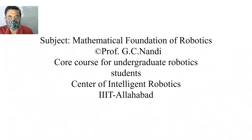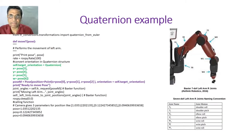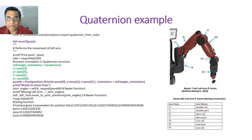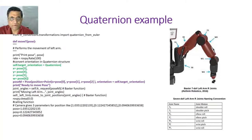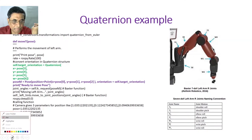Good morning and welcome back. Today we are going to discuss a very interesting and simple topic, but before that I will give you a Quaternion example. In most robots today they use Quaternions because programmers love it for orientation or game designing — it is very easy. I am giving you an example for the Baxter robot.